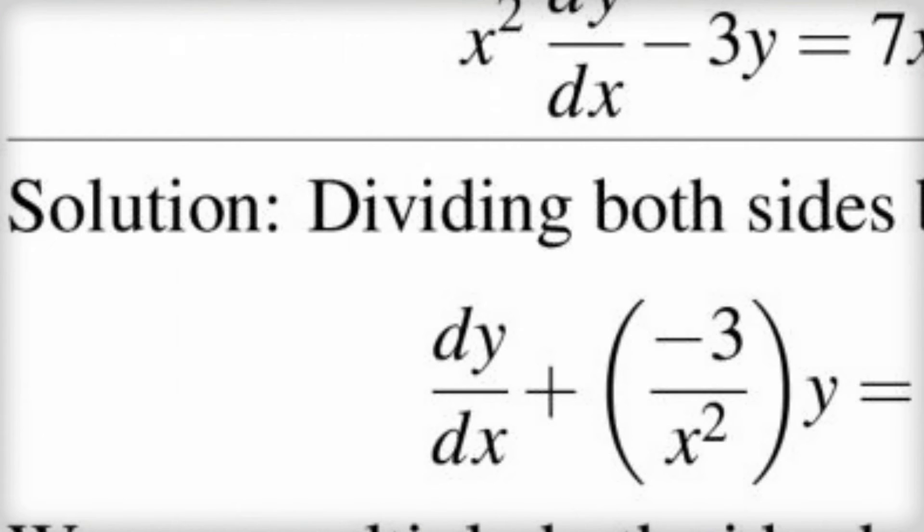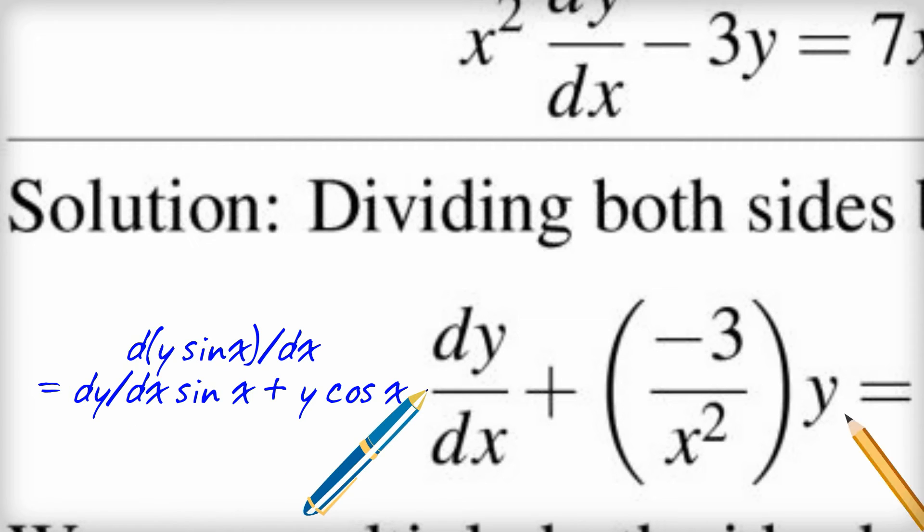So let's just take a moment to preview how this works because it's very clever. Someone looked at this and they said, look, what we've got on the left hand side is sort of the beginnings of the product rule for differentiation. So for example, if I take the derivative of say y times sin x, well I get dy/dx by sin x plus y times cos x. So I've got this sort of dy/dx and I've got a y and you can see here, I've got the beginnings of that here. I've got a dy/dx term and I've got a y term.